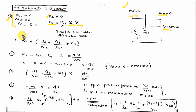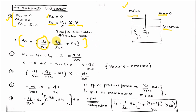Qs is the specific substrate utilization rate: Qs equals Mu upon Yxs plus Qp upon Yps plus Ms. Here the substrate can be utilized for growth (Mu/Yxs), for product formation (Qp/Yps), and for the maintenance coefficient (Ms). That means substrate consumption is allocated for growth, product formation, and maintenance. The second step is to apply the material balance equation.